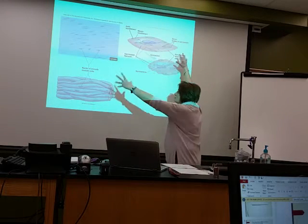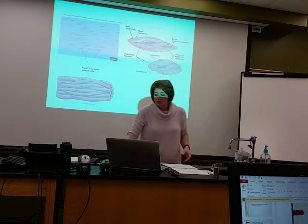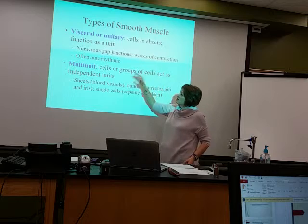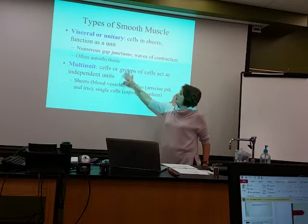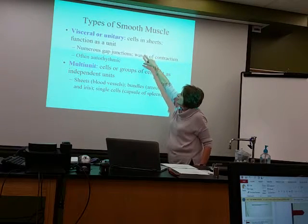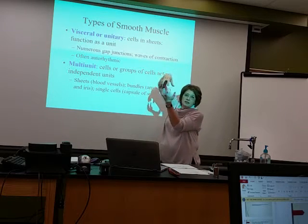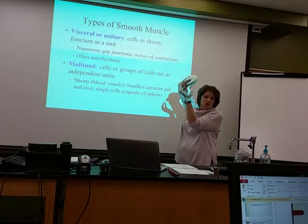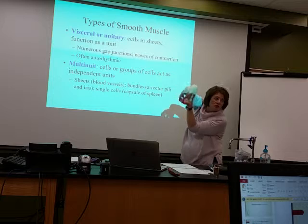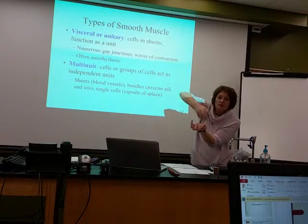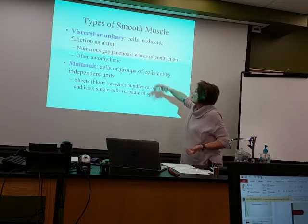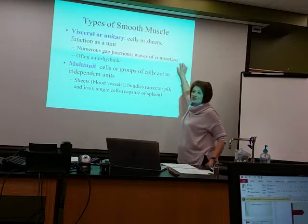So when we have smooth muscle, smooth muscle can be a unit or it can be a multi-unit. If it's going to be this visceral type, the cells are in a sheet. Think about the ureter tubes. They're doing this and they're a hollow tube, and it's the smooth muscle around it — a sheet of the smooth muscle functioning as a unit.